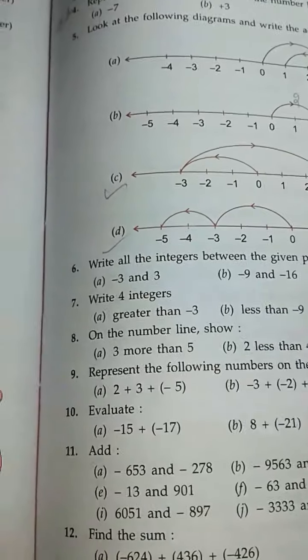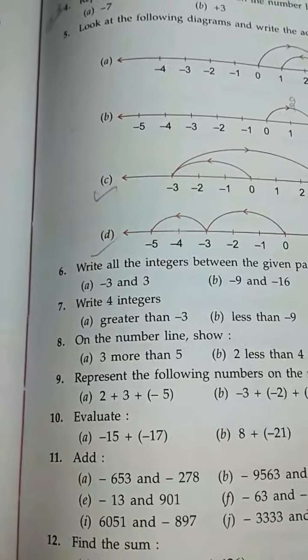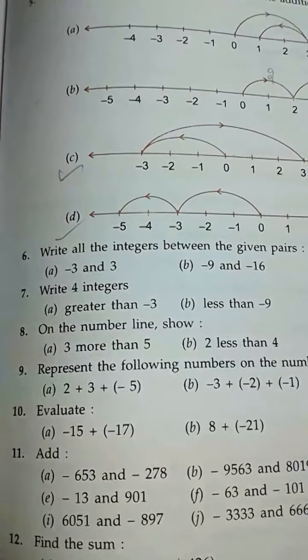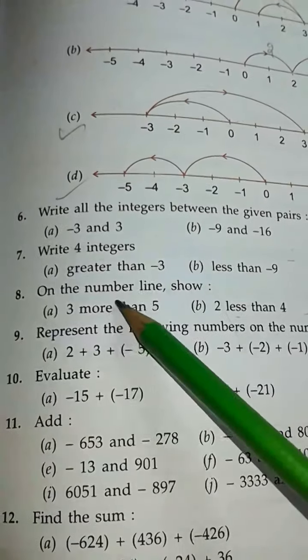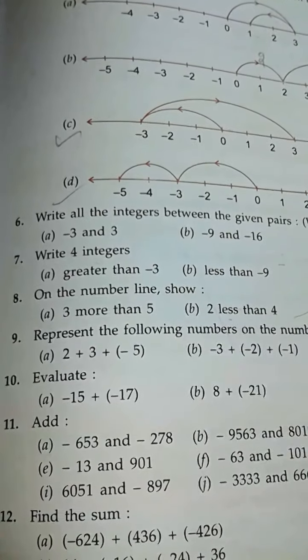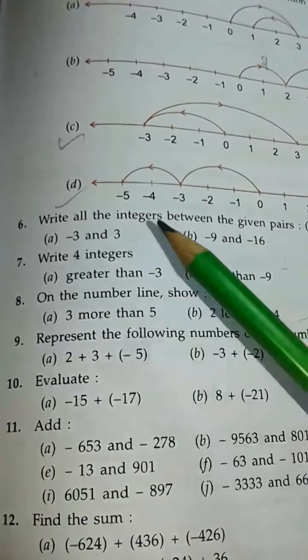So like this children, you complete C and D. Then comes to question 6: write all the integers between the given pairs. This one children, you do yourself.